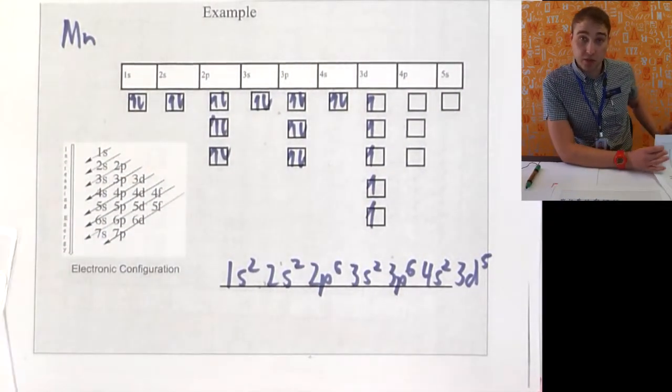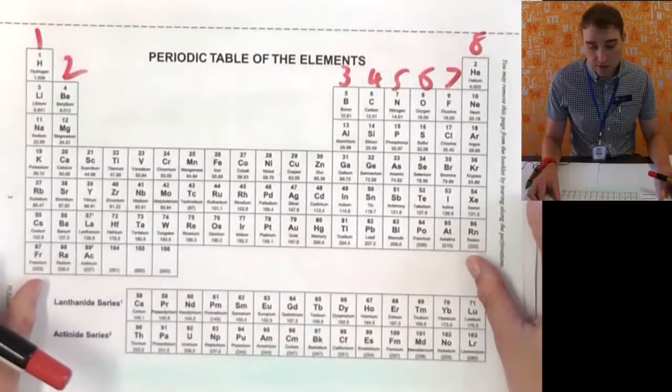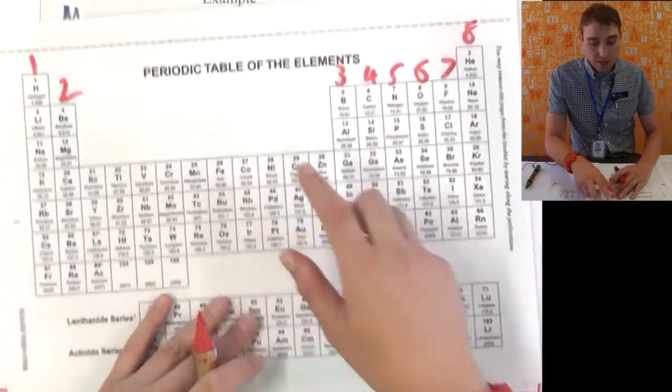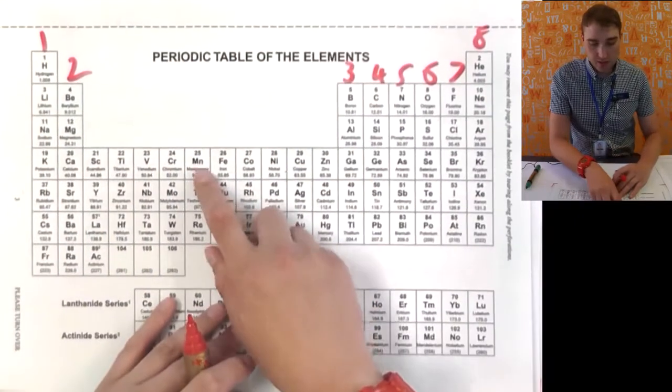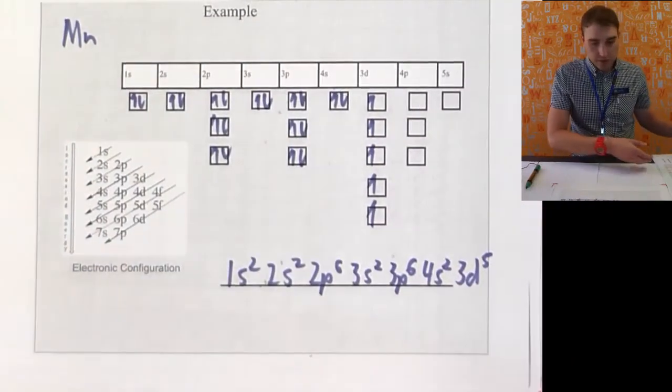Let's look at another example in the transition metals now. This is where it gets interesting and complicated. I'm doing manganese as my example. Manganese. It's number 25. So, I put in 25 electrons.